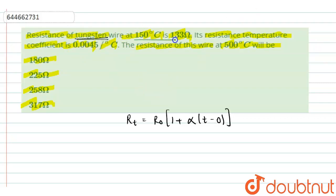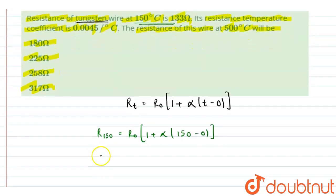Now let me write for the first part: we have R at 150 degrees Celsius equals R₀ times 1 plus α into 150 minus 0. So from here I can write 133 equals R₀ times 1 plus 150 into 0.0045. Let this be equation 1.